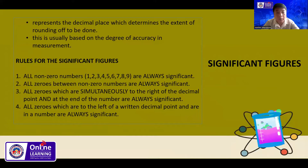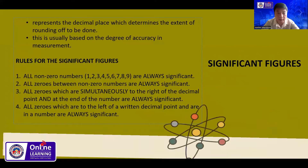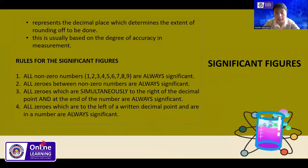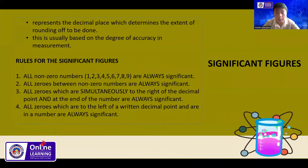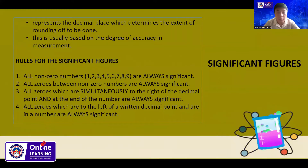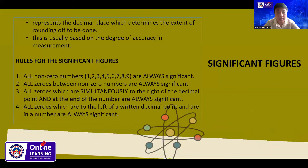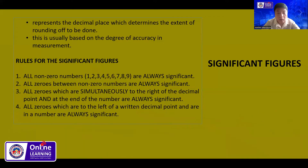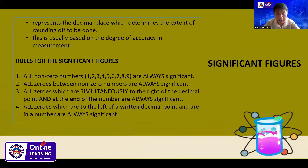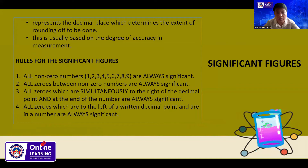There are some rules for significant figures. Rule 1: all non-zero digits (1–9) are always significant. Rule 2: all zeros between non-zero digits are always significant. Rule 3: all zeros simultaneously to the right of the decimal point and at the end of the number are always significant. Rule 4: all zeros to the left of a written decimal point in a number are always significant.